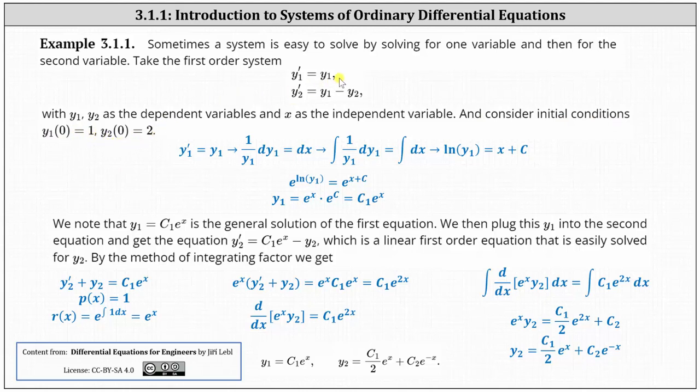Looking at the equations, we can solve the first equation for y1 using separation of variables. We can write the equation as 1 divided by y1 dy1 equals dx. Integrating both sides, we have natural log y1 equals x plus c. Exponentiating both sides with a base of e, we have e raised to the power of natural log y1 equals e to the power of x plus c. Simplifying, we have y1 equals e to the x times e to the c, and let's call the constant e to the c, c sub 1. This gives us y1 equals c1 e to the x. This is the general solution for the first equation.